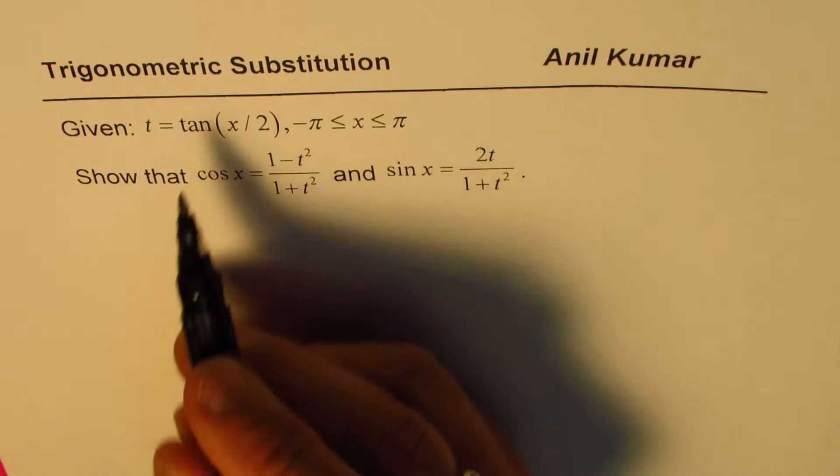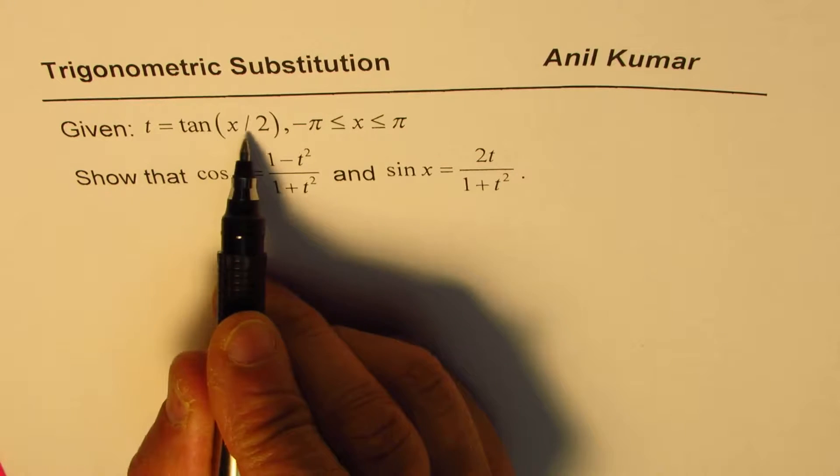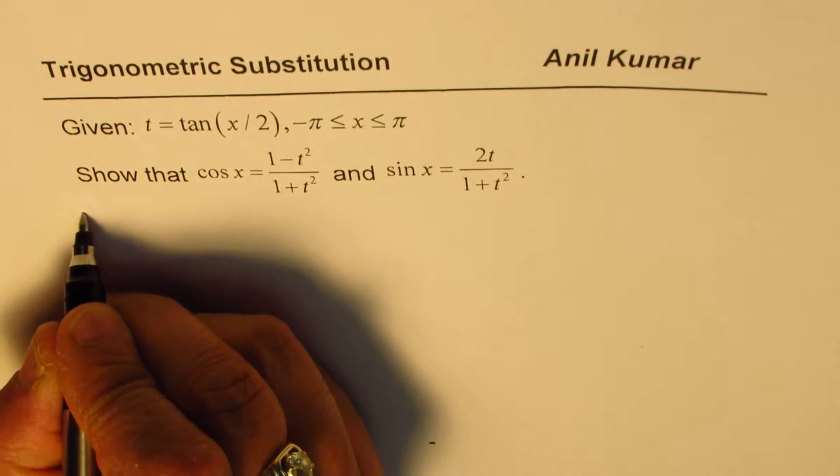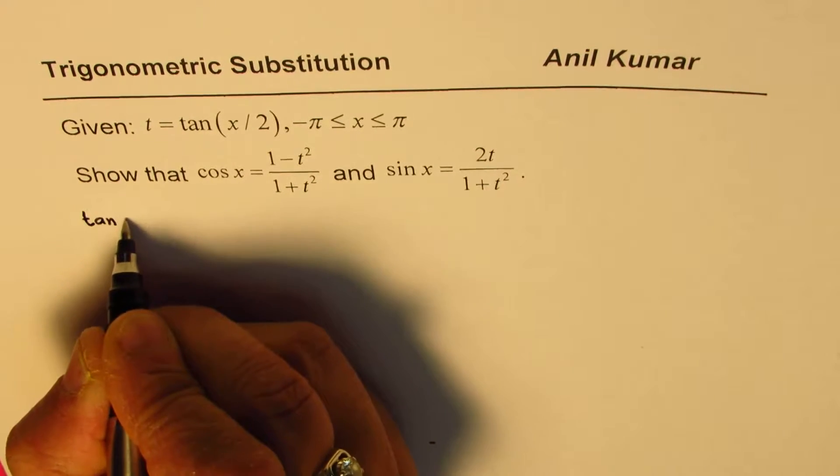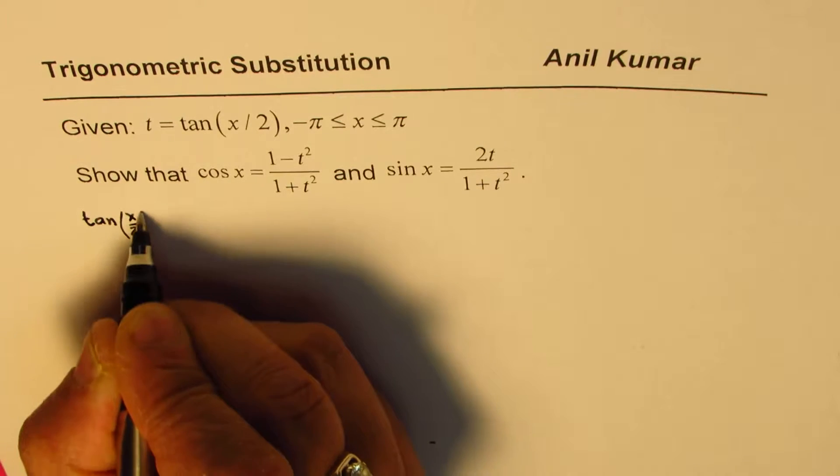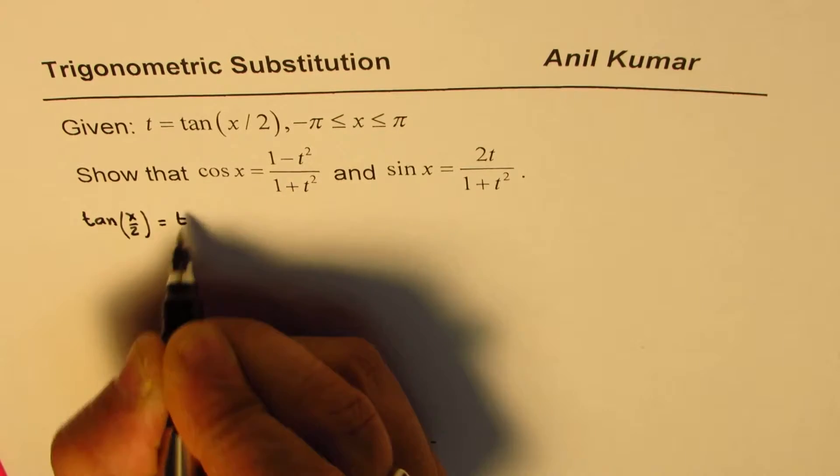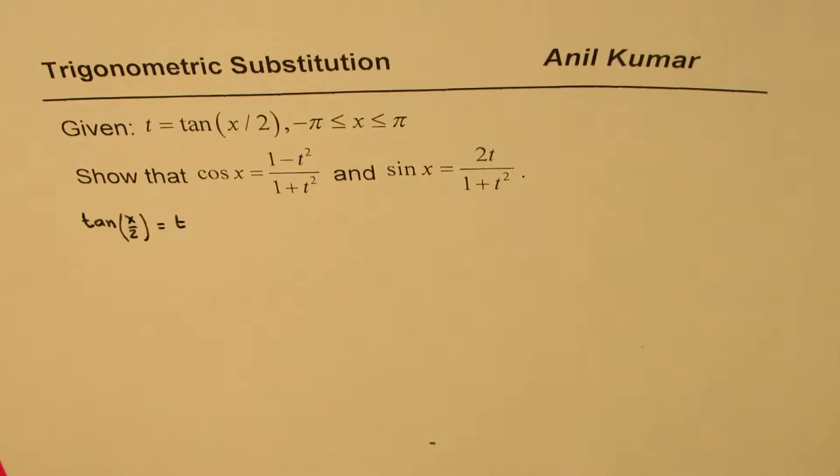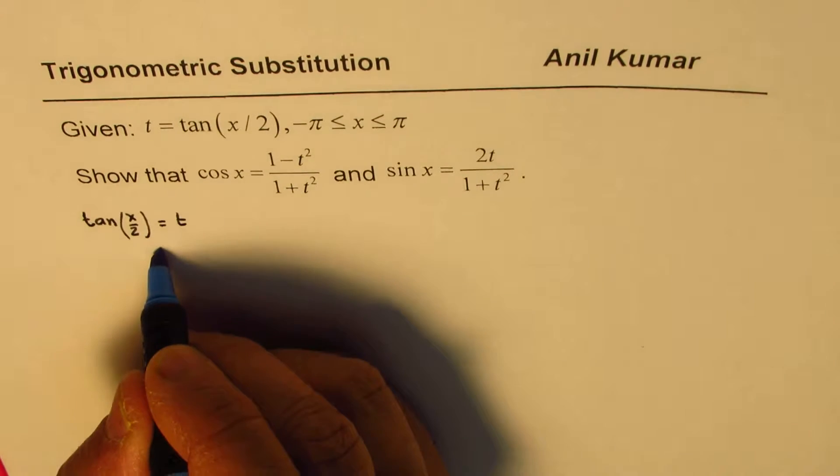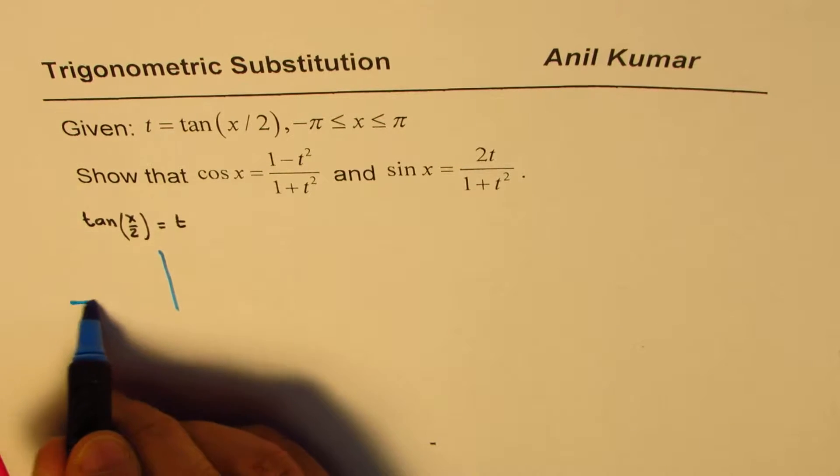Now when we say t is tan(x/2), let me write this as tan(x/2) equals t. Now what does that mean? It really means that if I have a right triangle, let me make one here.